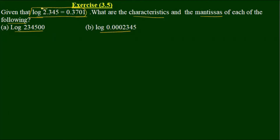The numbers we are working with are 2.345, and also 2345, and 2.345 in various forms. We need to identify the characteristics for each of these.